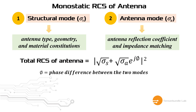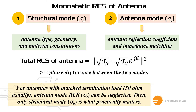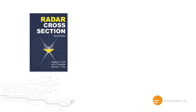The structural mode RCS depends on the antenna type, geometry, and material constituents, whereas the antenna mode depends on the reflection coefficient — basically the impedance matching of the antenna. Practically, all the antennas we employ in practical applications are matched with 50 ohm, so they have a matched load termination condition. In that case, we can ignore the antenna mode RCS, and what practically matters is the structural mode RCS. However, if we vary the load, the antenna mode RCS will come into play.